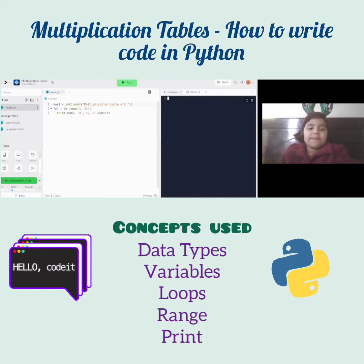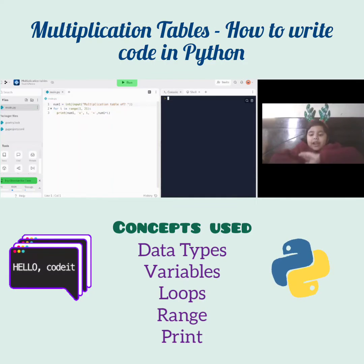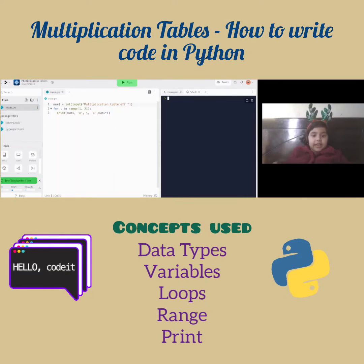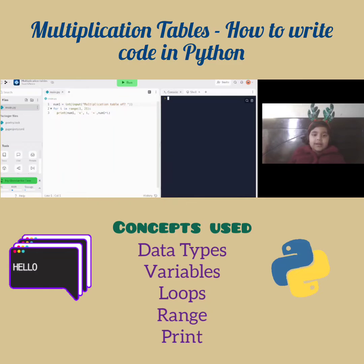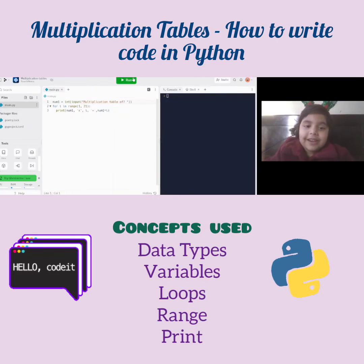Now about the 'for i in range' thing — it is a loop. The loop will repeat things over and over again. It will print this multiple times: 'num times i', where i equals num times i.